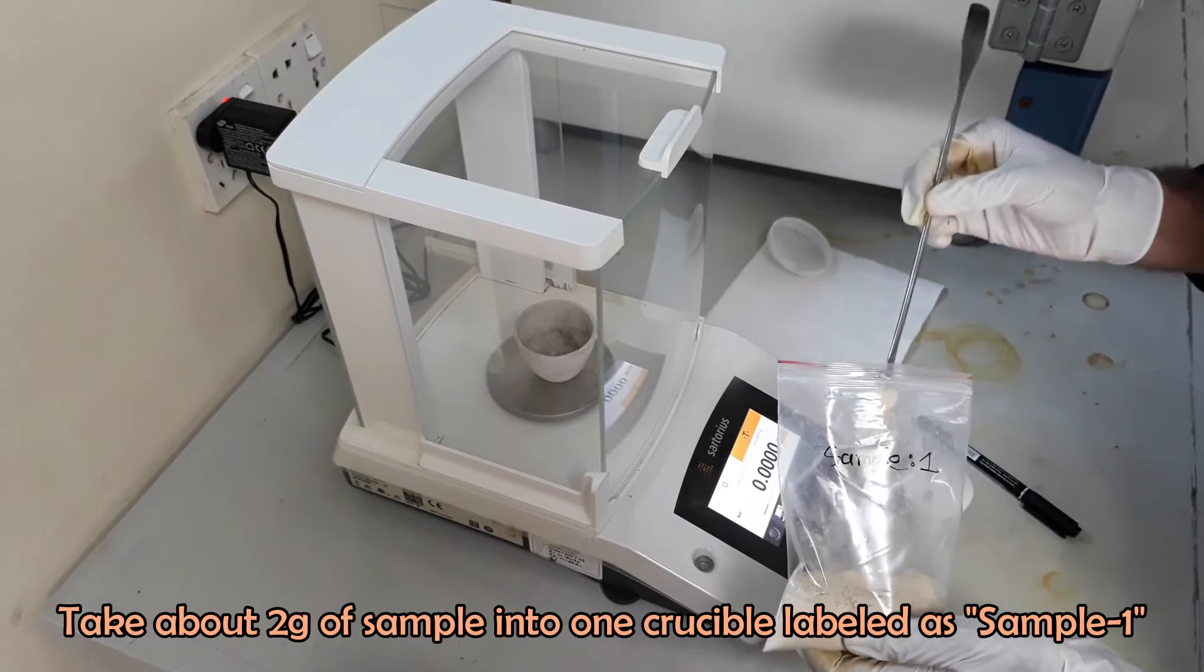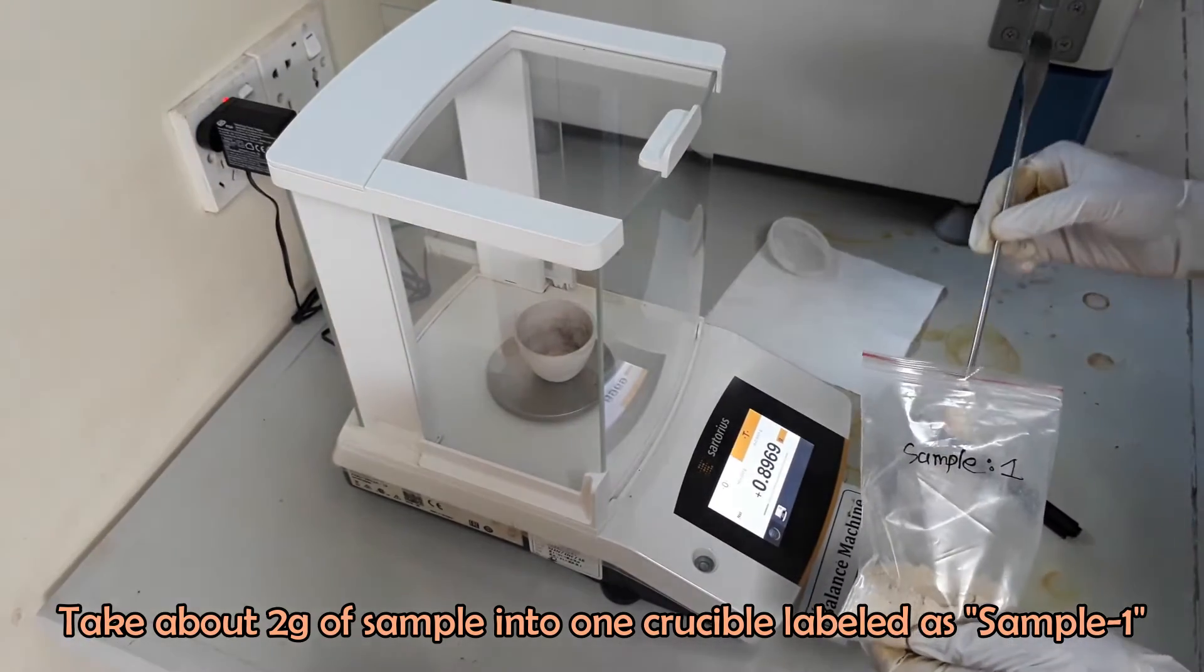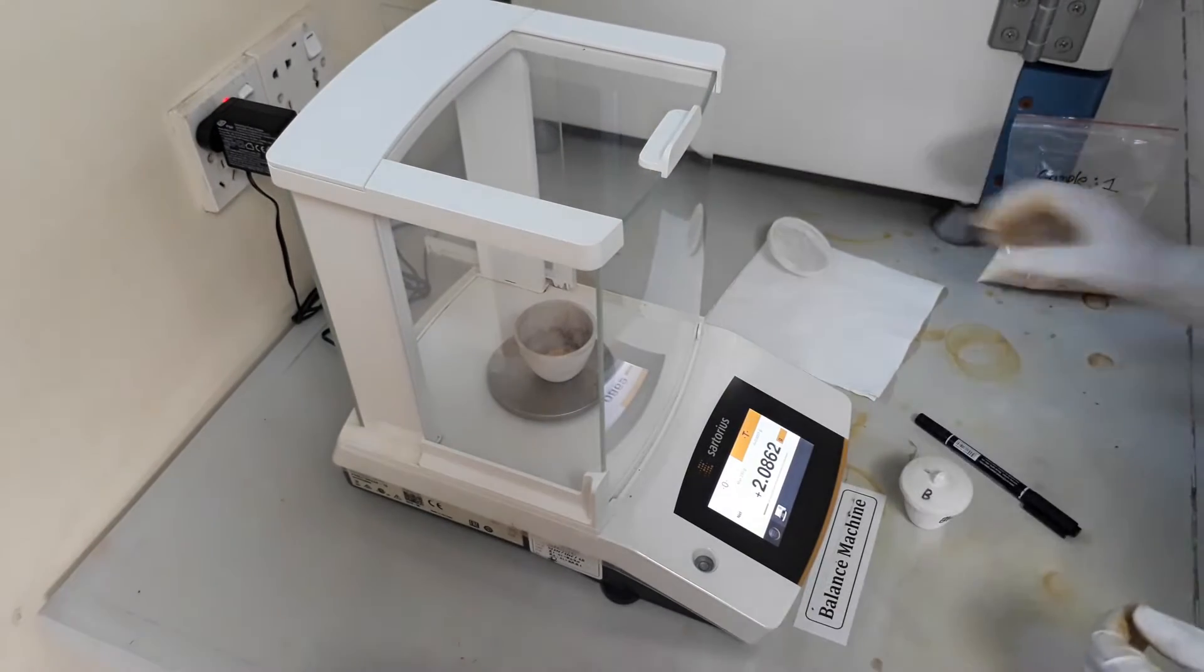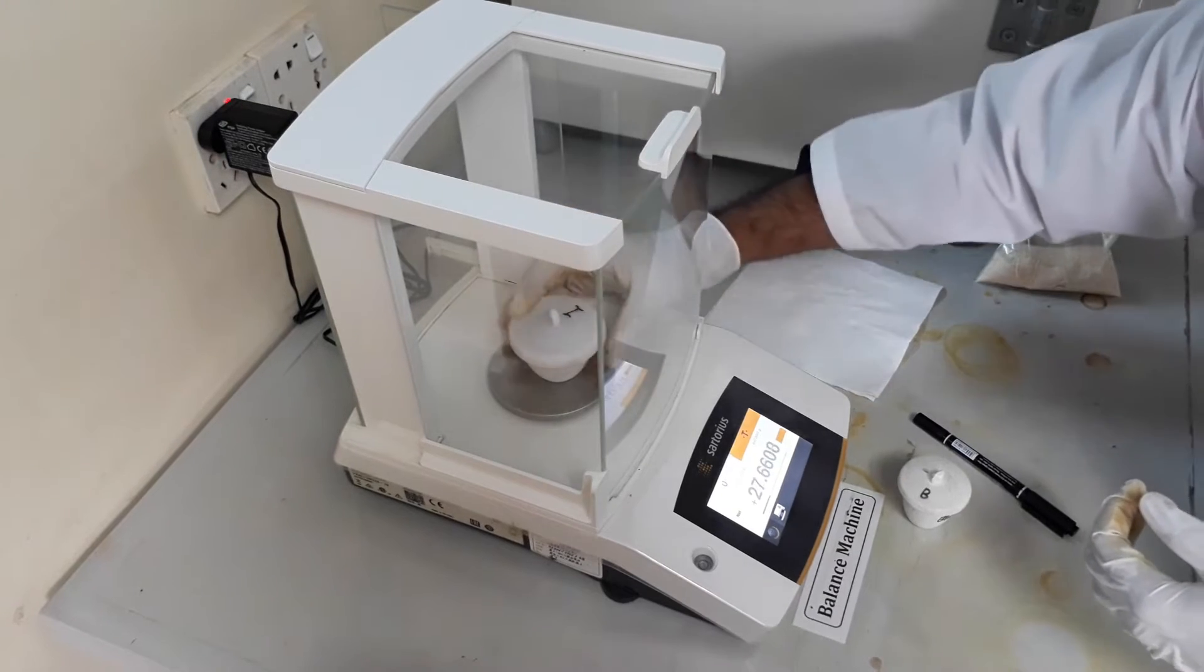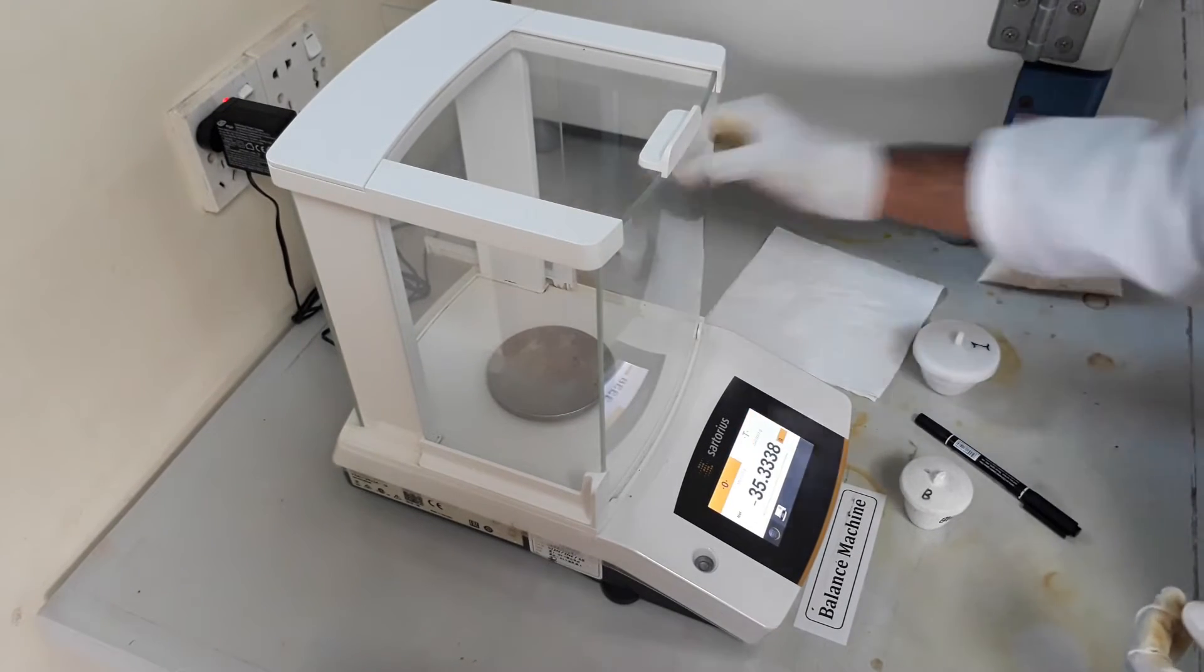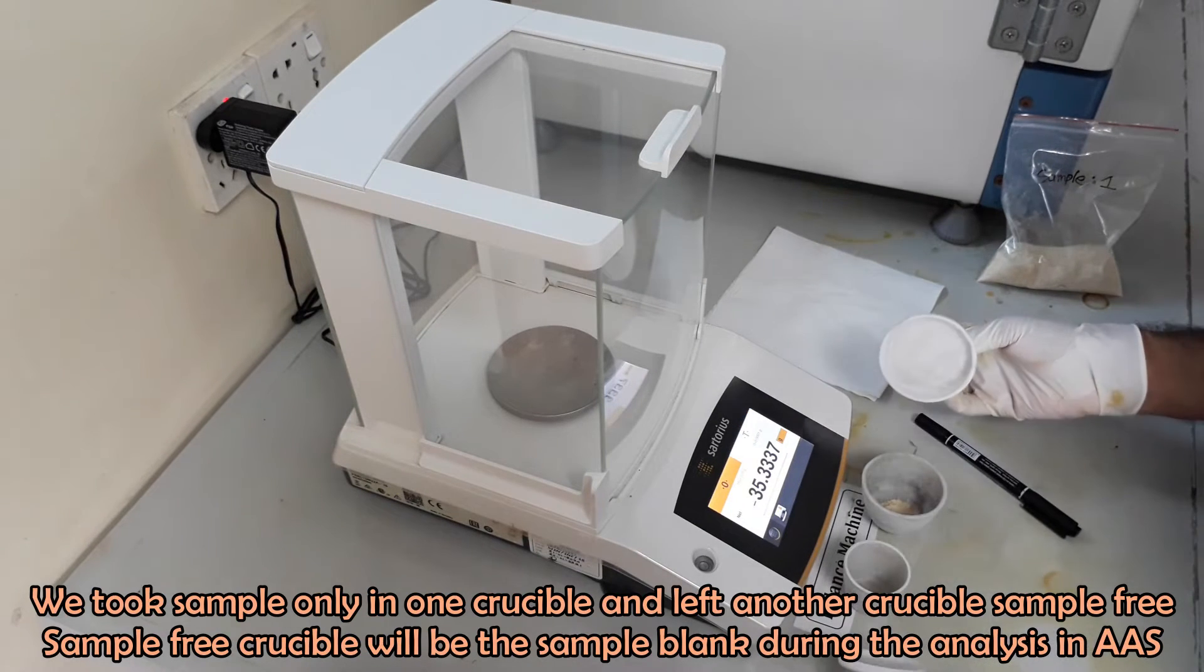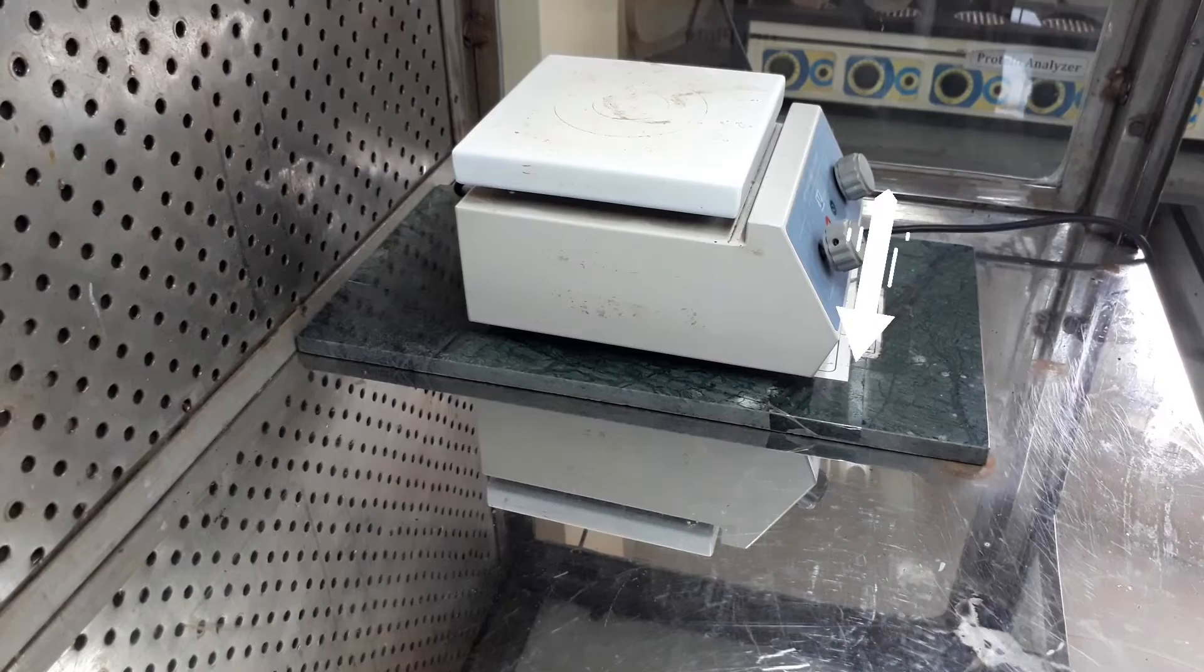Take about 2 grams of sample in a crucible labeled with sample ID. Cover the crucible immediately with its lid. We took sample in one crucible keeping another crucible left blank. Sample blank will be prepared in this blank crucible following every step for the sample preparation except taking sample in it.